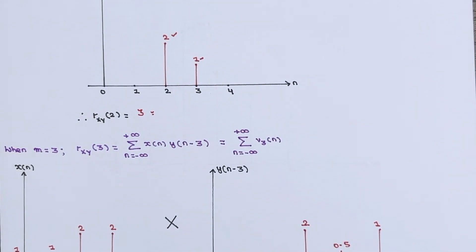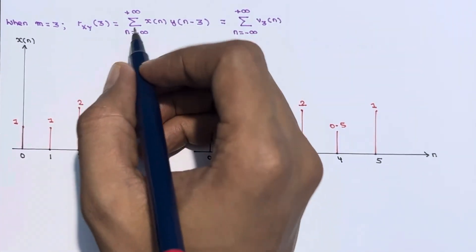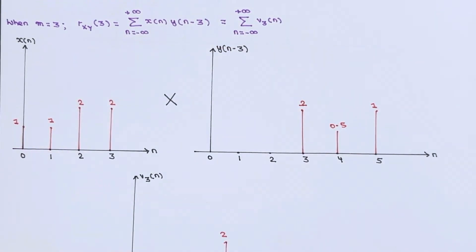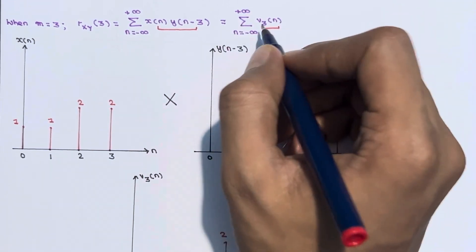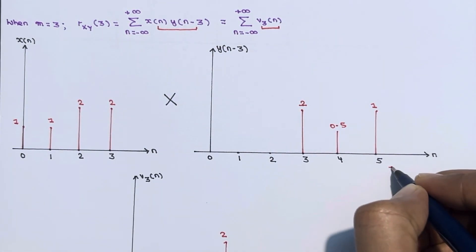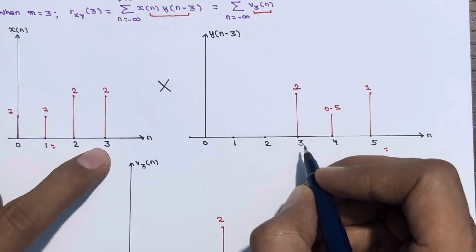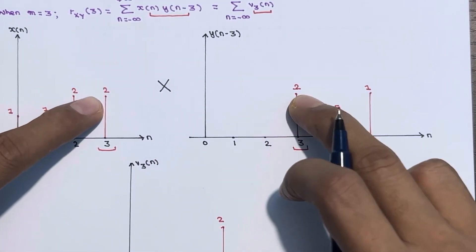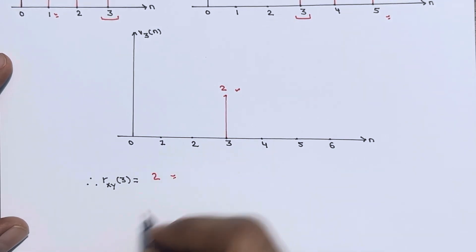When m = 3, rxy[3] = summation of x[n] · y[n - 3], represented as v_3[n]. Take y[n - 2] and shift one more unit to the right to get y[n - 3]. The only common instance of x[n] and y[n - 3] is at n = 3, where 2 × 1 = 2. Summing the single-element product sequence gives rxy[3] = 2.